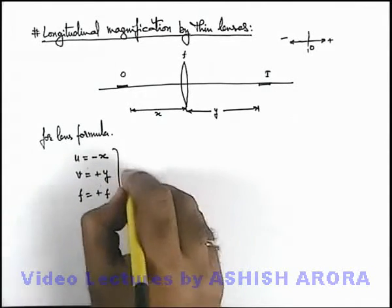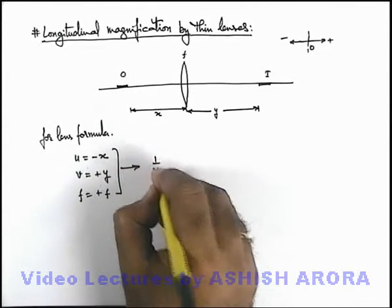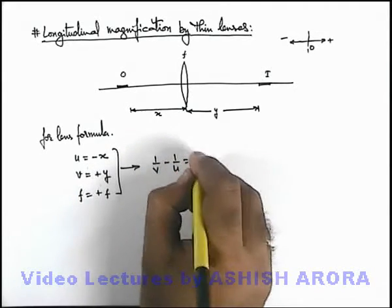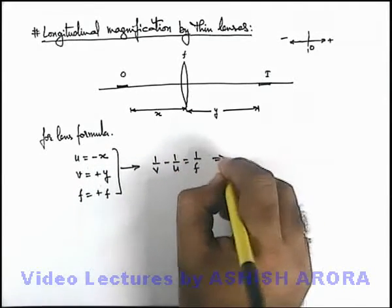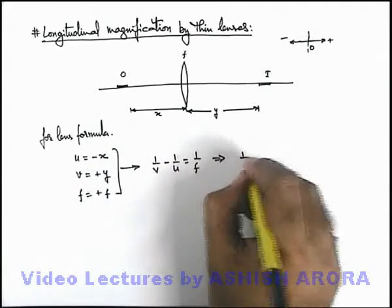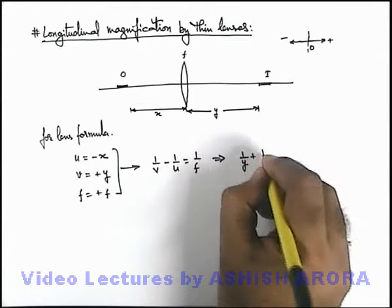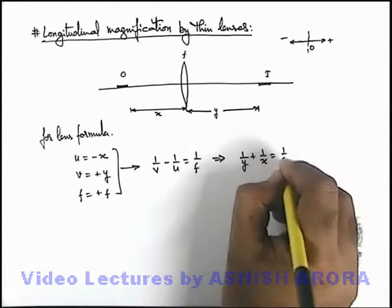If we use these relations in the formula 1 by v minus 1 by u is 1 by f, we are getting 1 by y plus 1 by x is equal to 1 by f.